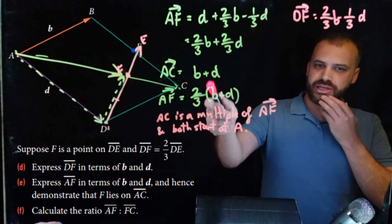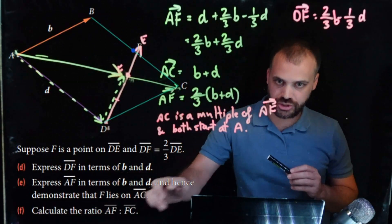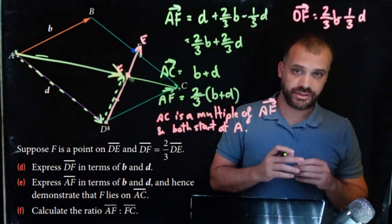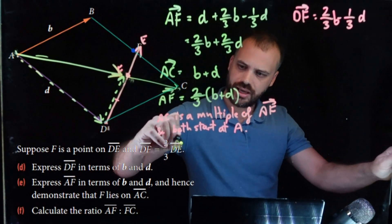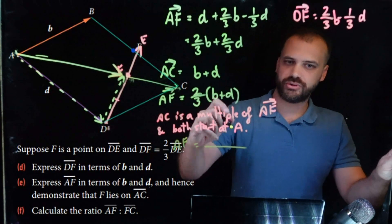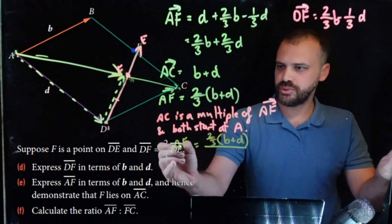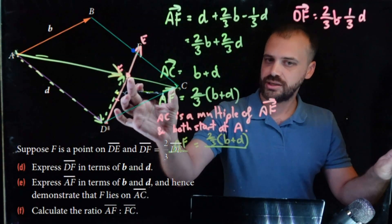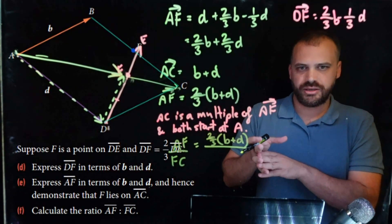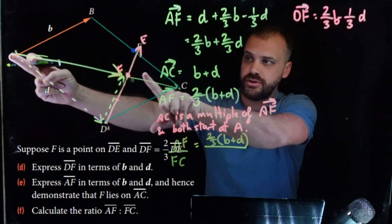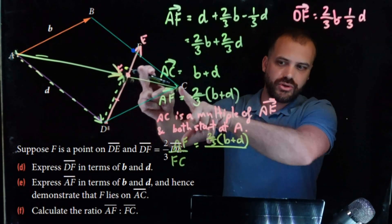I might just leave this here while we consider the last part and see how we feel about it. So the question says, calculate the ratio AF to FC. Alright, so AF is this piece here. So, I'm just going to do that like here. AF. Now, AF is equal to, we already know this, 2 thirds B plus D. And we're doing the ratio of AF to FC. And this piece here is FC. We haven't found FC yet, but we know that AC is B plus D. And we know that AF is 2 thirds of B plus D, which means that FC must be 1 third of B plus D.